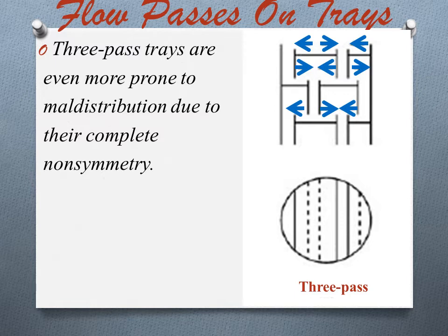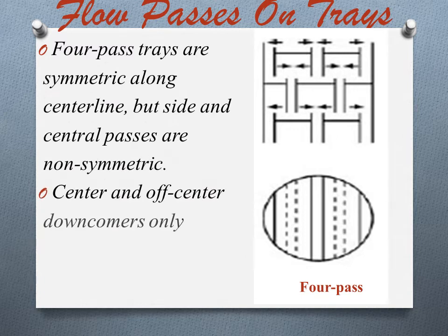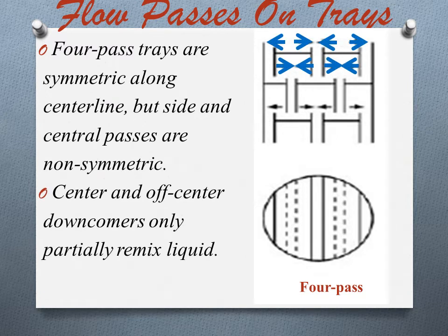Trays smaller than 1.5 meter diameter seldom use more than a single pass. Those with 1.5 to 3 meter diameter seldom use more than 2 passes. In the 4-pass arrangement, 4-pass trays are symmetric along the center line but the side and central passes are non-symmetric. The center and off-center downcomers only partially remix the liquid, allowing any maldistribution to propagate. Maldistribution can cause major loss of efficiency and capacity in 4-pass trays, which are common in high liquid services with towers larger than 5 meter diameter.